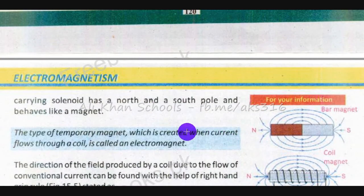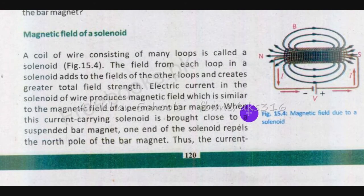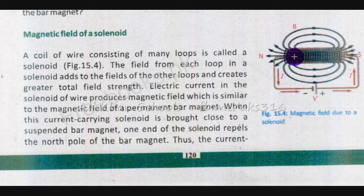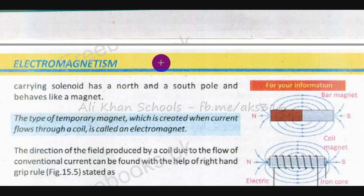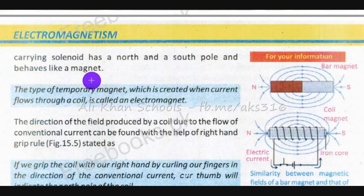Thus the current-carrying solenoid has a north and a south pole and behaves like a magnet. Matlab is solenoid ka ek north pole bhi hai aur ek south pole bhi hai. North pole hamesha woh hota hai jahan se magnetic lines of force bahar nikal rahi hoti hain, aur south pole woh side hoti hai jahan se saari magnetic field lines andar aa rahi hoti hain.